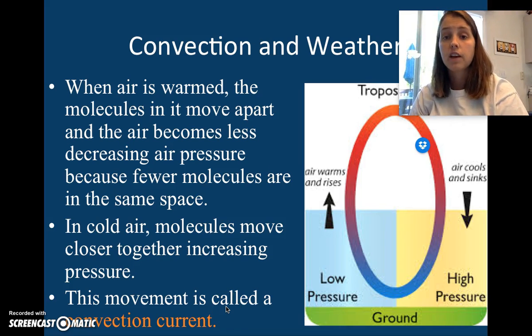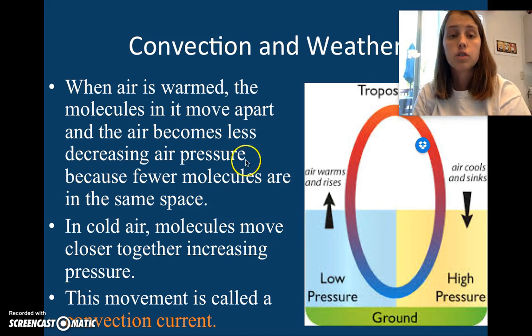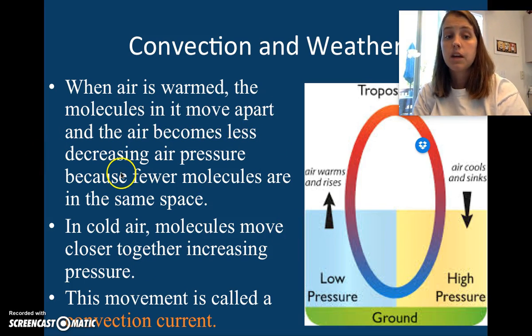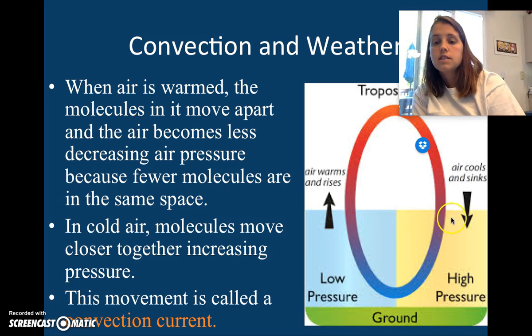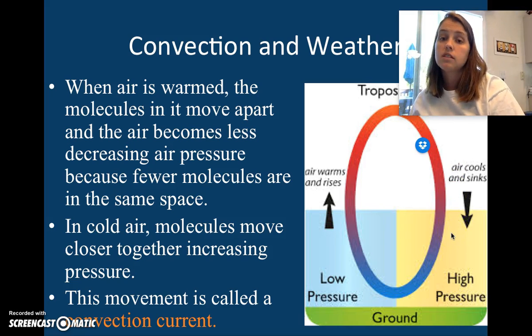This is the same way that the convection currents work here on Earth. When air is warm, the molecules in it move apart and the air becomes less dense, decreasing the air pressure because fewer molecules are in the same space. Here we have the ground. As the cool air sinks, cool air means cold. The molecules aren't moving very fast, and when the molecules aren't moving very fast, that means they're going to be closer together, which means there's going to be more high pressure. So cold air sinks. It is high pressure. You can think of high pressure as heavy. It sinks towards the ground.